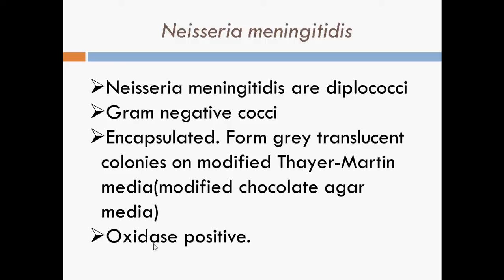Next, Neisseria meningitidis. Neisseria meningitidis are diplococci. They are gram-negative cocci and are encapsulated, meaning there is a capsule surrounding them. They form grey translucent colonies on modified Thayer-Martin media, which is actually modified chocolate agar media. They are also oxidase positive.